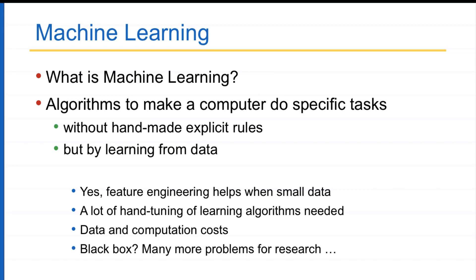Machine learning is not a solved problem. It is not that everything is understood and machines can learn anything and everything. Machine learning is still a black box — many researchers are studying what the machine is actually learning, how we can probe into these models, how we can improve and diagnose them, and why certain outcomes are being generated. There are so many open research problems.